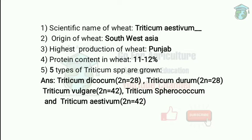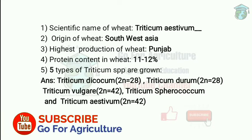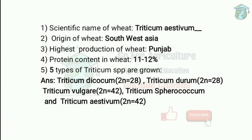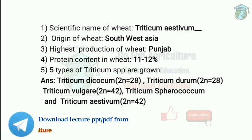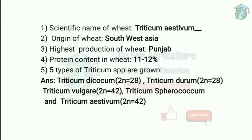The scientific name of wheat is Triticum aestivum and the origin is Southwest Asia. The highest production of wheat by state according to 2020 is Punjab. The protein content in wheat is 11 to 12 percent, which is drastically higher than other cereals.